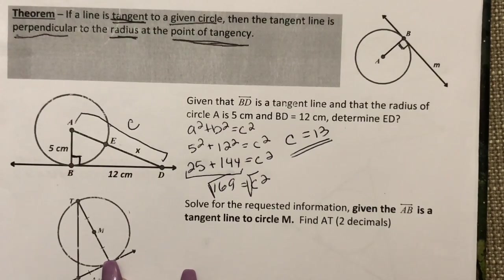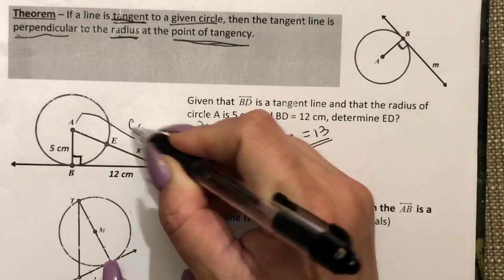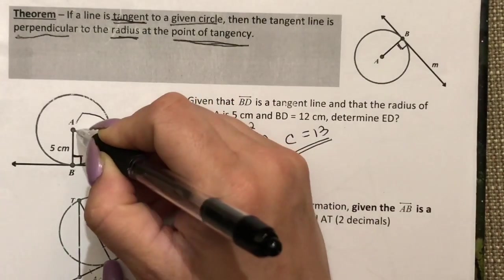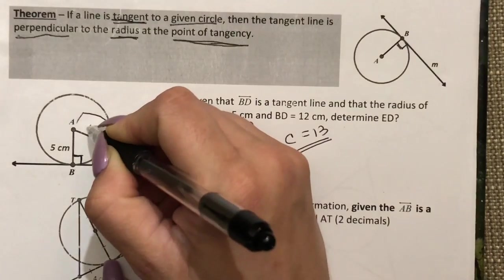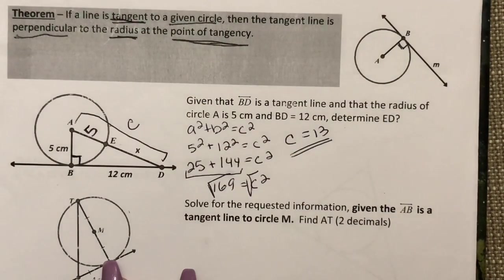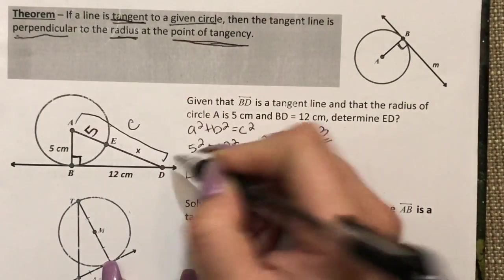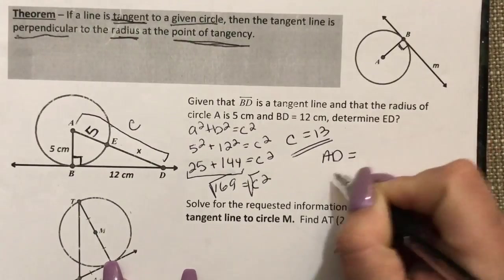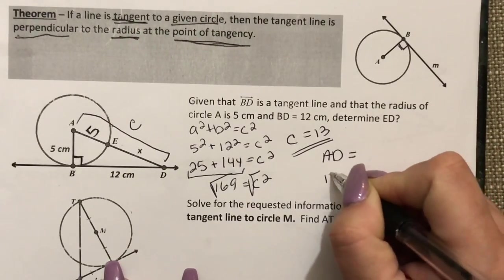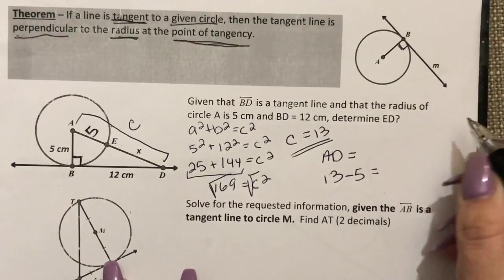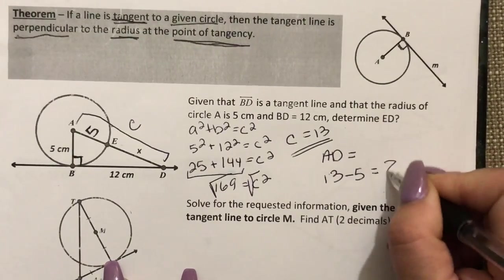So that means the entire hypotenuse equals 13. Now if I want to solve just for this missing piece I'm going to plug in what I know. What you may not have realized is that from A to E this is also a radius, so I can go ahead and label that 5 as well. And since I know that the entire leg AD is 13, all I'm going to do is subtract the 5 and I will be left with 8.